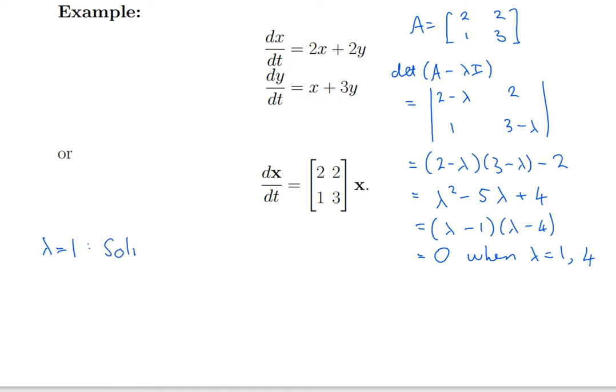I need to solve A minus 1 times I times k is equal to 0. Now, the matrix A minus lambda I, I've already written down up here, I just refer back to it and substitute lambda equals 1. And, I get 1, 2, 1, 2 times k equals 0. Two equations and two unknowns.